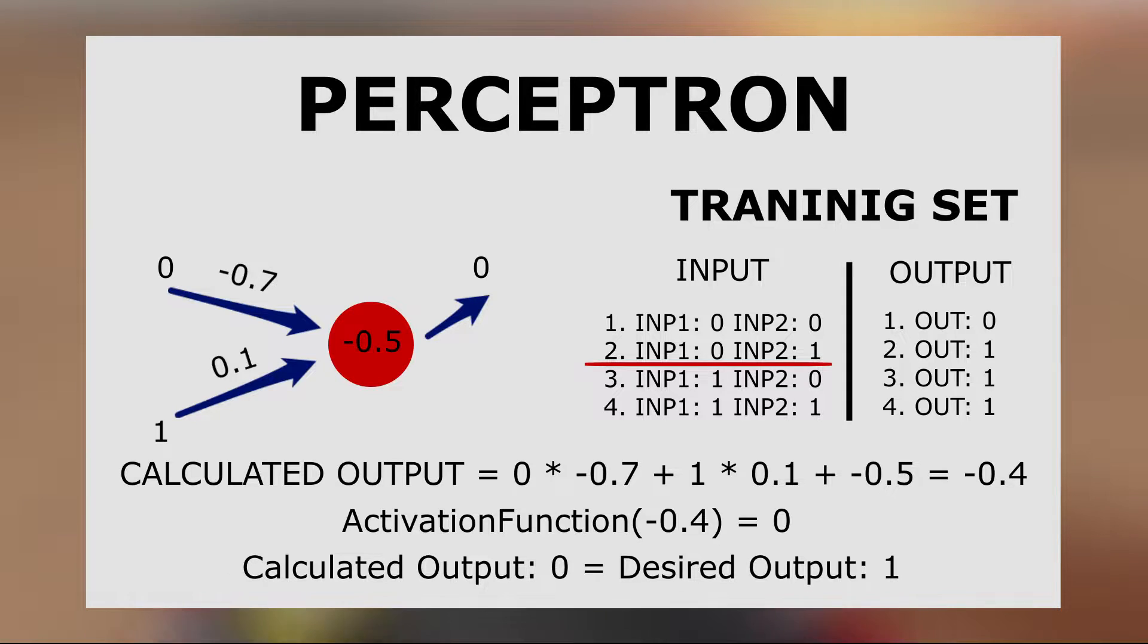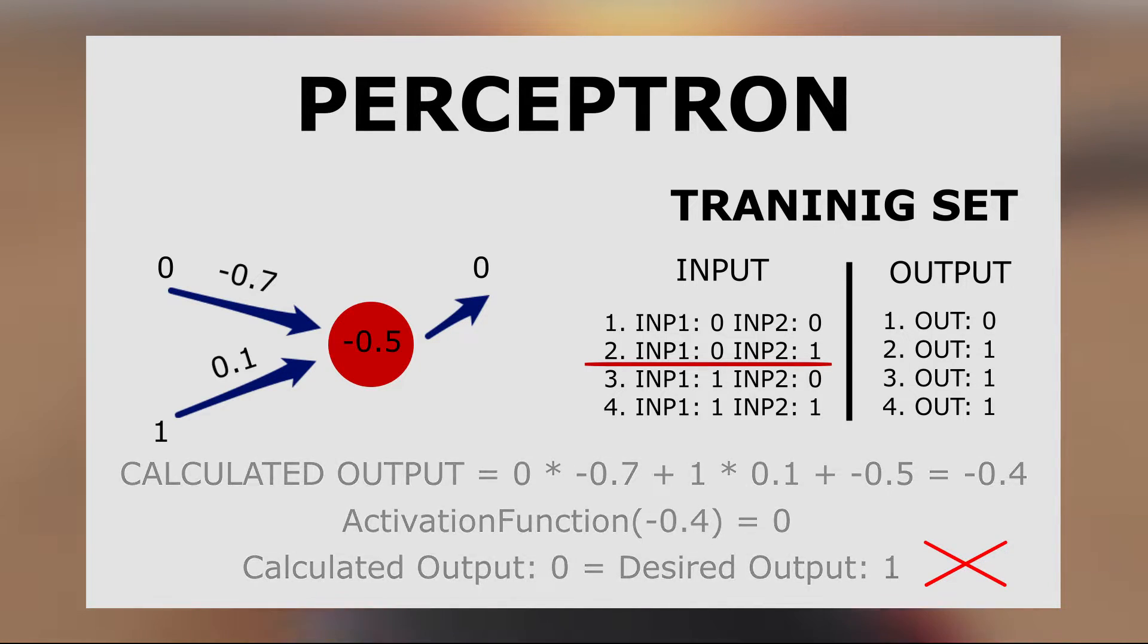We do this process all over again. For the second training set, we can see that the activation function output is not equal to the desired output. In that case, our Perceptron needs to change its weight values and bias.